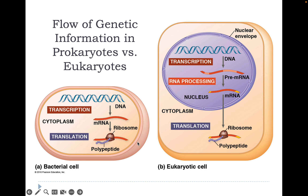In a prokaryotic cell, we have our DNA. It's transcribed to mRNA — that's the recipe card. Then it goes to the ribosome where polypeptides are made. Polypeptides combine to form functional proteins; these are long strings of amino acids.